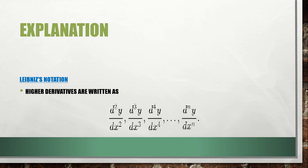Higher derivatives are written as follows: if you differentiate twice you get the second derivative, then the third derivative, the fourth derivative, and the nth derivative. Here n is basically an integer showing the position of your derivative — for example, position four is the fourth derivative, position three the third derivative. N can be a positive integer greater than one.